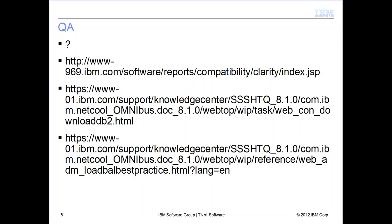We're intermittently noticing duplications of page listings in the default folder — how can we prevent that? This is definitely a misconfiguration of some sort. I'd open a PMR to investigate — it could be a directory permission issue or server times not being in sync. Especially if it's intermittent, it could be a combination of these things.